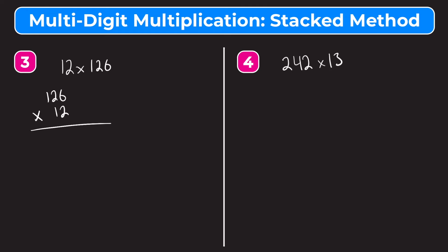Now we multiply. Starting with the 2 in 12: 2 times 6 is 12, so we write the 2 and carry the 1. Then 2 times 2 is 4, plus the 1 we carried is 5. Then 2 times 1 is 2. Now we multiply the 1 in 12 by 126 — really we're multiplying by 10, so we put a 0 here and go: 1 times 6 is 6, 1 times 2 is 2, and 1 times 1 is 1. So we have 2 times 126 which is 252, and 10 times 126 which is 1,260.